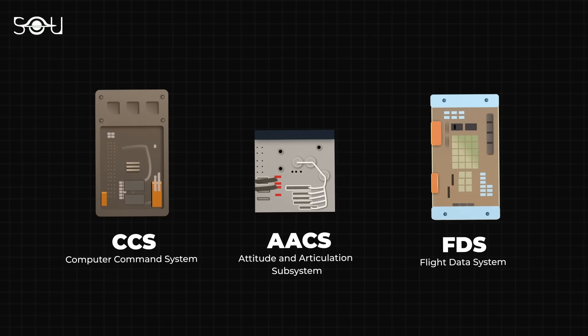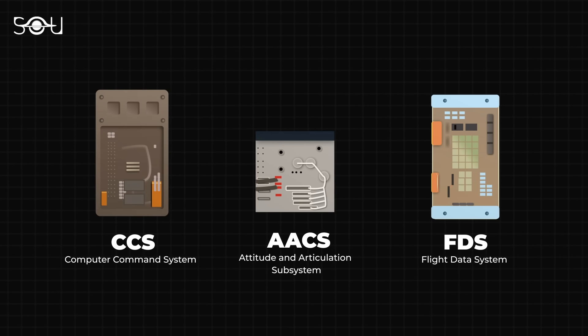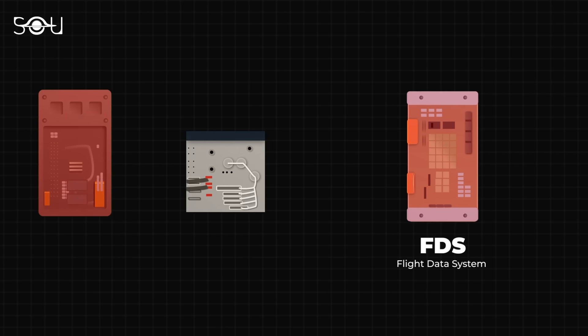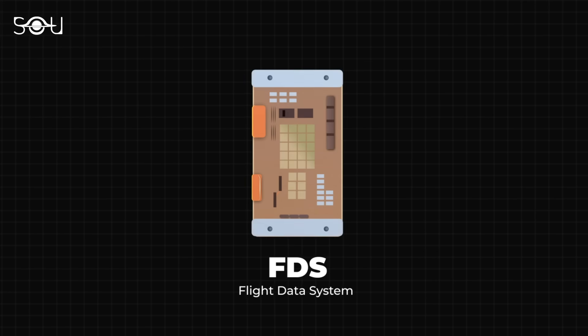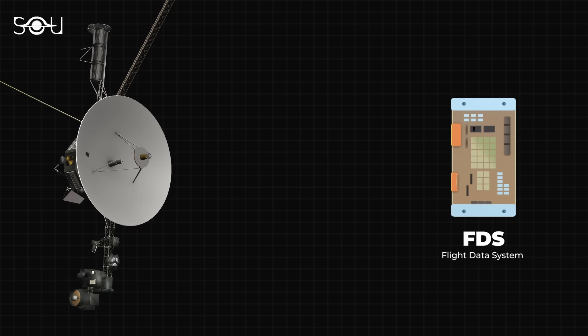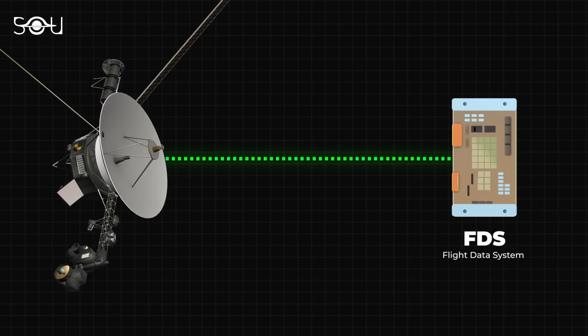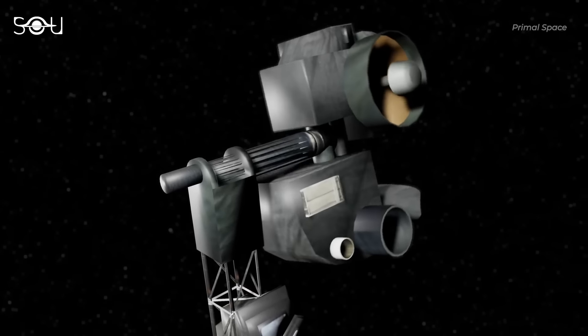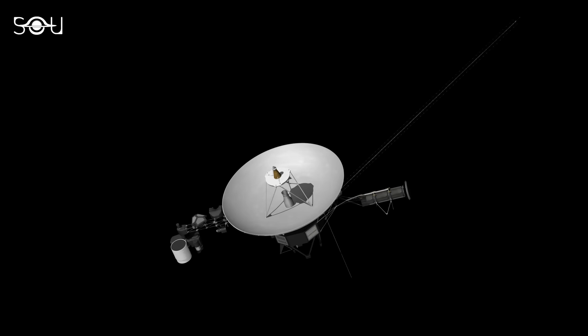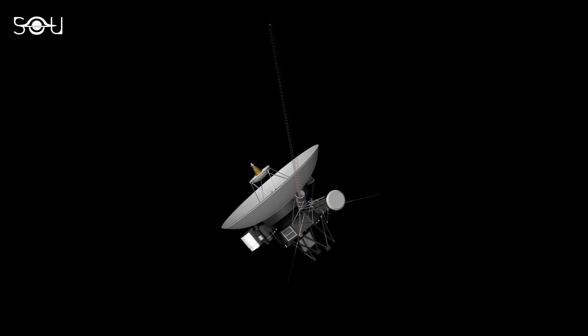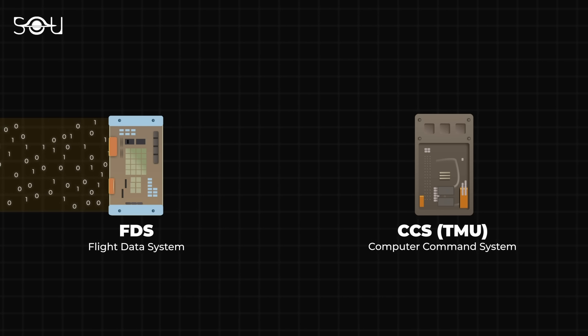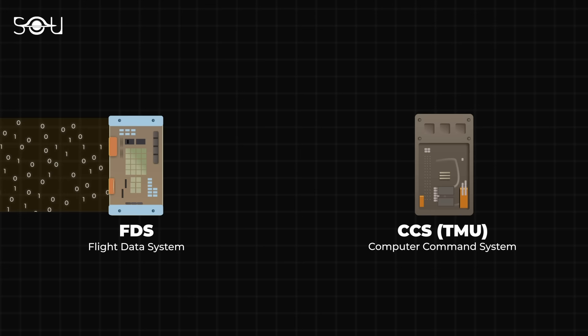There are three main computers onboard Voyager 1, and the problem is linked to two of them. The first computer is called the Flight Data System, or the FDS. It is responsible for collecting two types of information from the spacecraft: data from scientific instruments designed to study the universe, and data related to the spacecraft's own health, indicating if all parts are working correctly or not. After collecting this information in binary format, the FDS processes and combines it into a single data package.